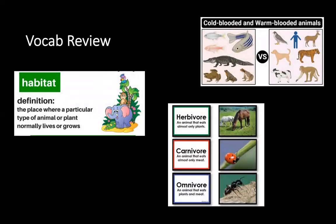The first word I want to review is habitat. Habitat is a place where a particular type of animal or plant normally lives or grows. It provides food, water, and shelter. Herbivores are animals that eat plants. Carnivores are animals that eat meat. And omnivores are animals that eat both meat and plants. Warm-blooded animals can control their body temperature, and cold-blooded animals cannot control their body temperature.